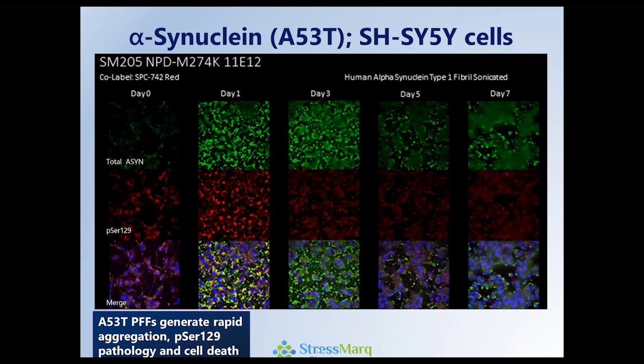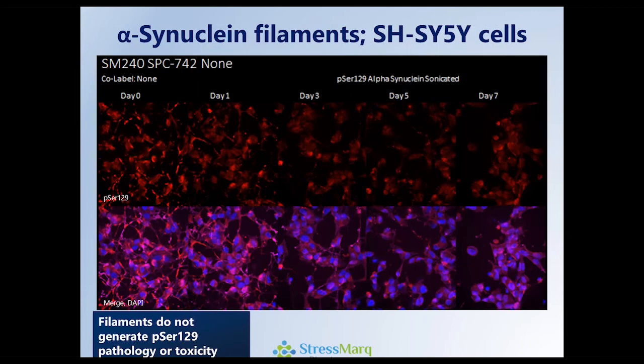If we take A53T mutant fibrils and introduce them to CHI-5 cells, we see using a total alpha-synuclein antibody a large amount of aggregation followed almost immediately by cell death, mirrored also in the phosphoserine 129 pathology shown in red. On the other hand, if we take just the filaments, known in the literature not to be toxic or induce seeding, we see exactly that — almost no change in the phosphoserine 129 signal and the cells remain relatively healthy.